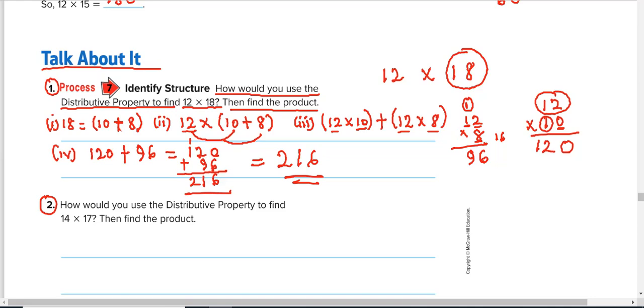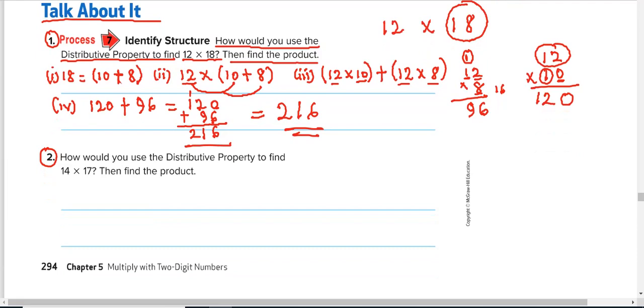So I want you to pause the video and try this number 2 by yourself. How would you use the distributive property to find 14 times 17? This time around, please pause the video and do it yourself before you play it back. So I'm going to do it quickly. 17 becomes 10 plus 7. Step 2, you have the number 14 now multiplies 10 plus 7. And the next step, we use the number 14 to multiply each of the numbers inside, 10 and 14 multiplies 7.